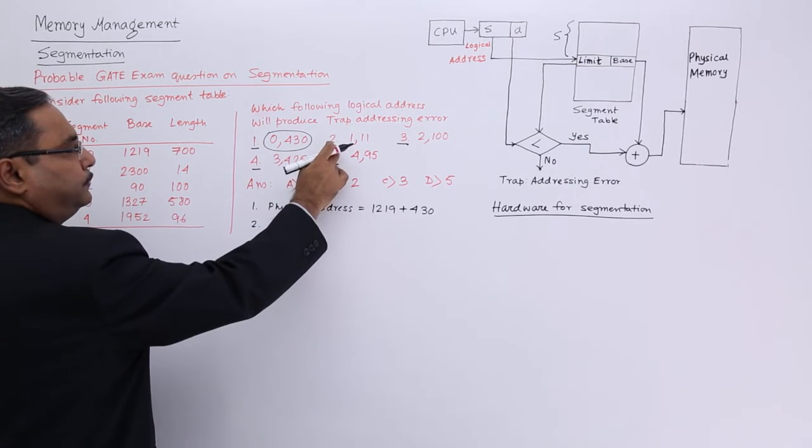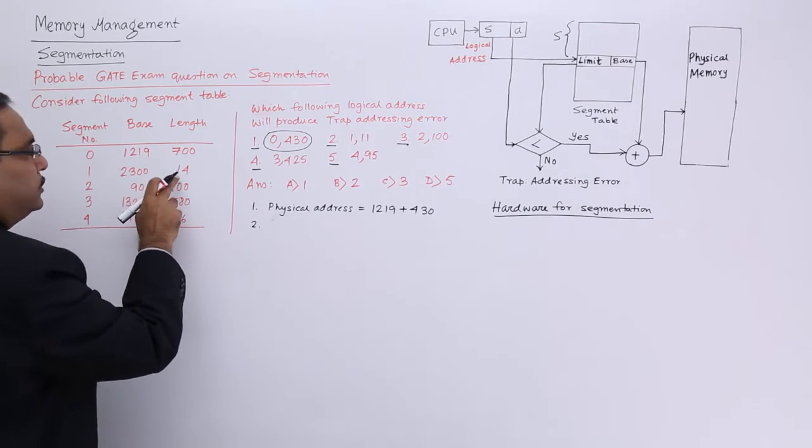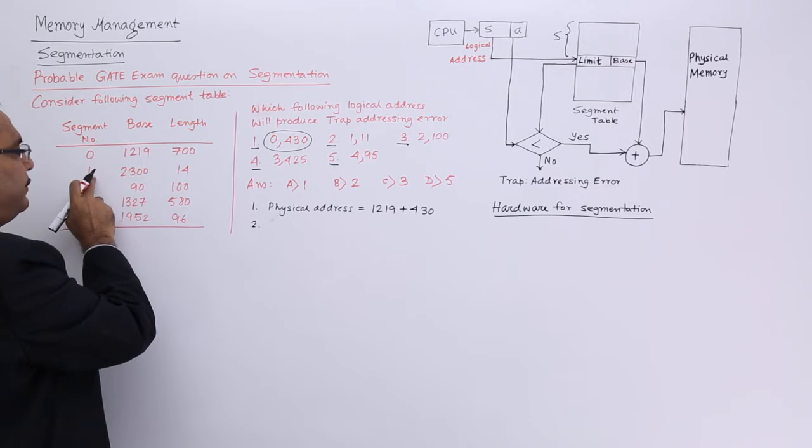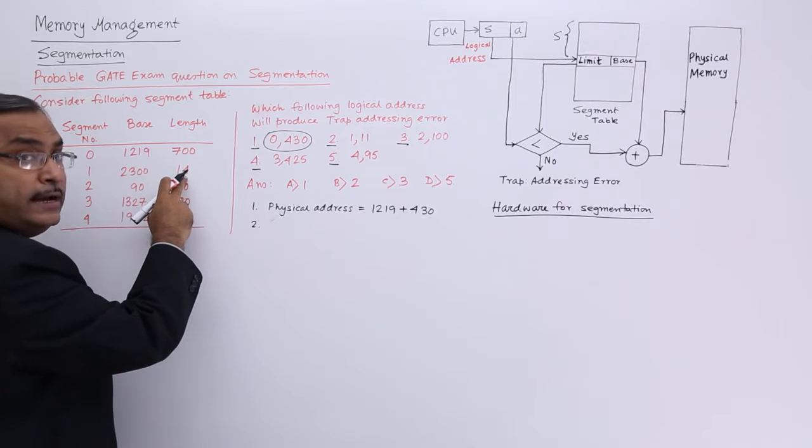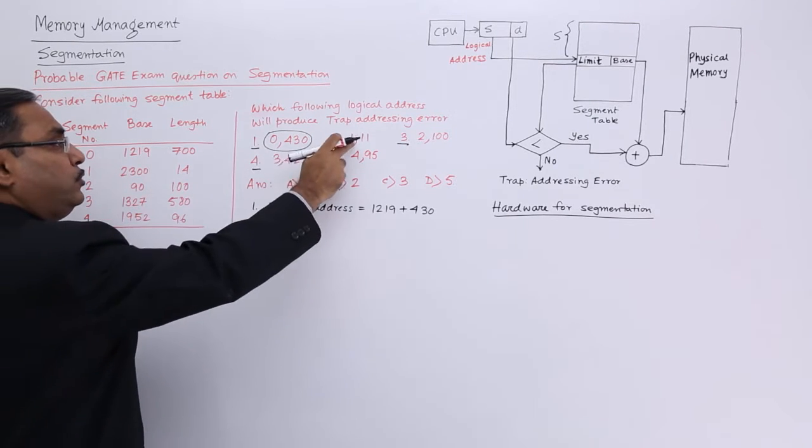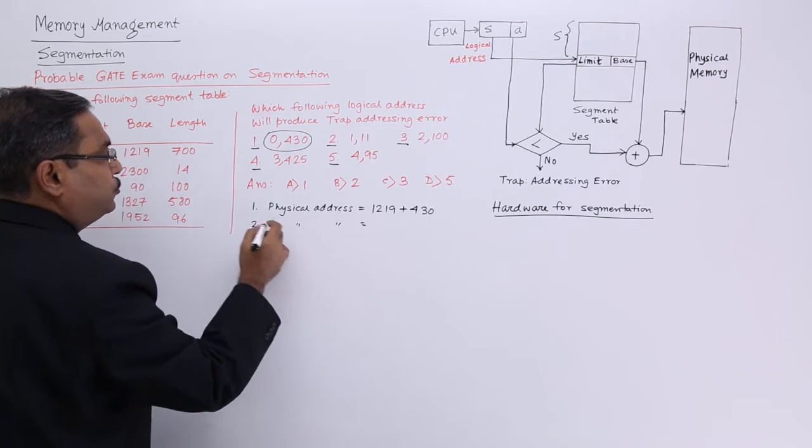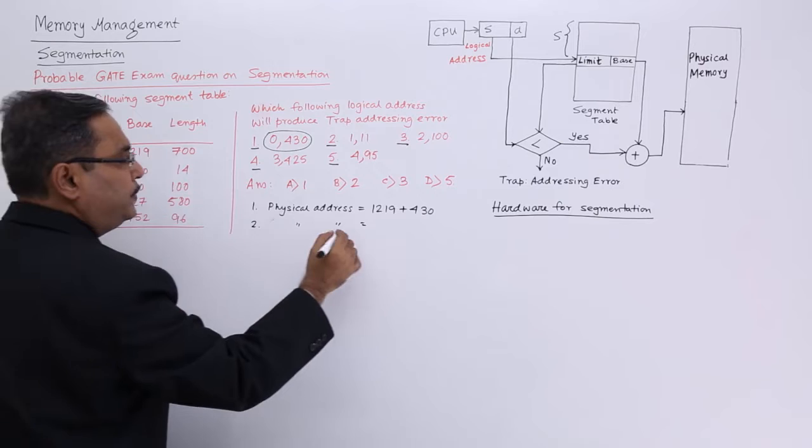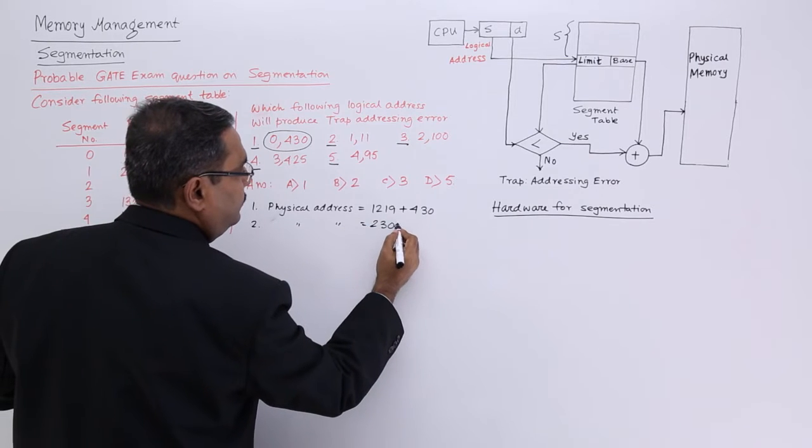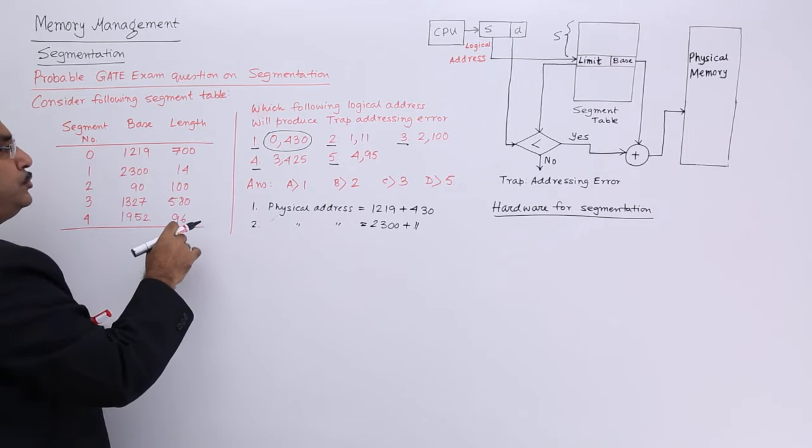Now next one, logical address number 2: 1,11. So segment number 1, 11 is less than 14, so that is why it will not produce any logical error, any addressing trap error. So the physical address will be 2300 plus 11.